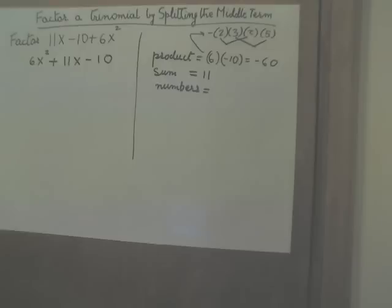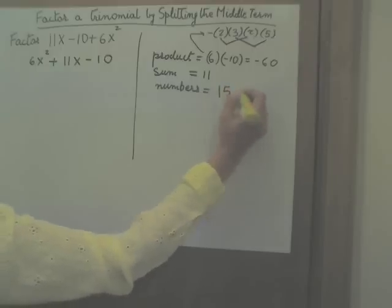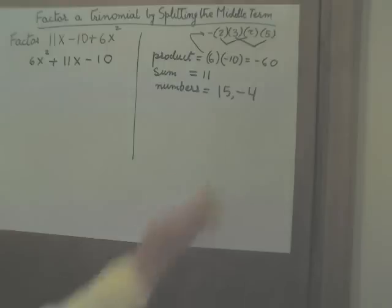What happens when you add 15 and negative 4? That does give us 11. So bingo, that worked. 15 and negative 4 are the numbers we are looking for. The product of these two numbers is negative 60. The sum of these two numbers gives me 11.